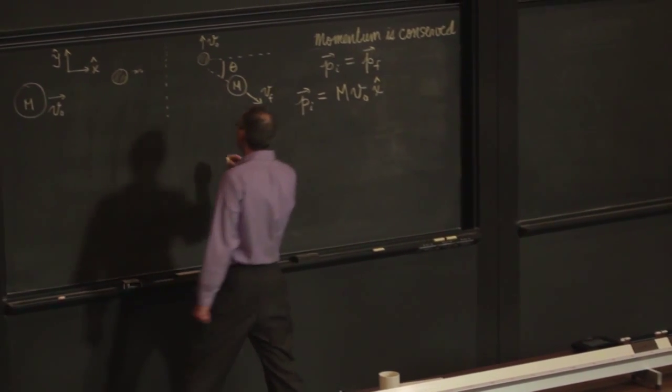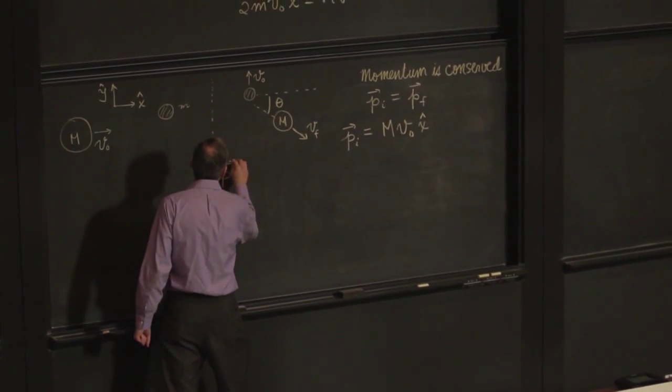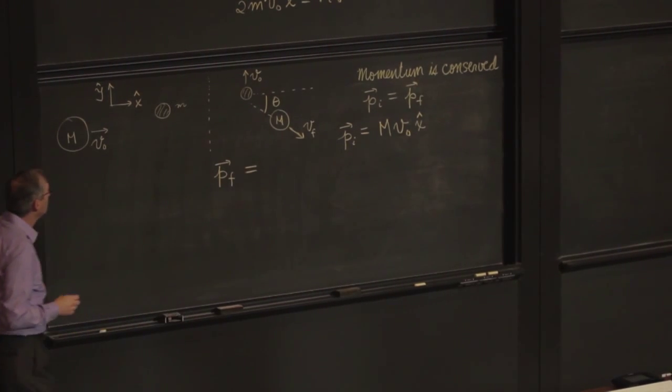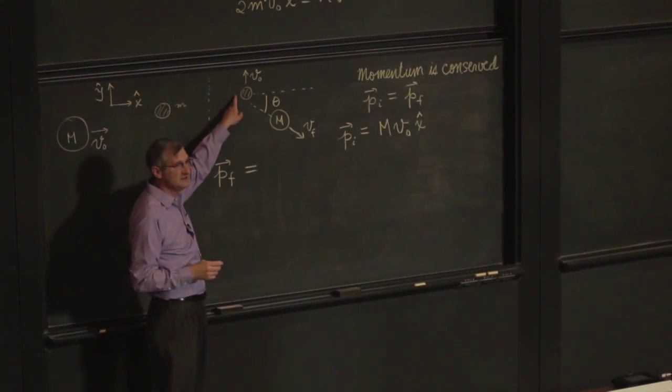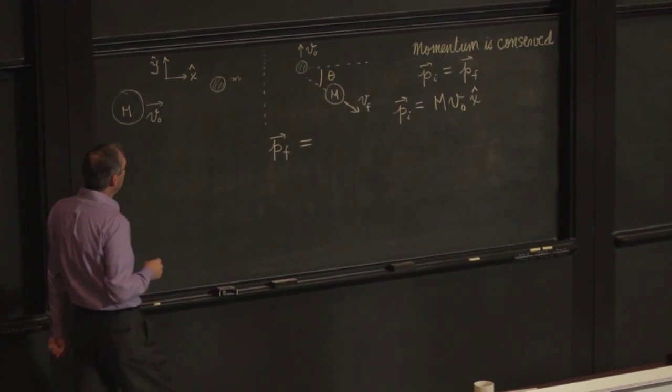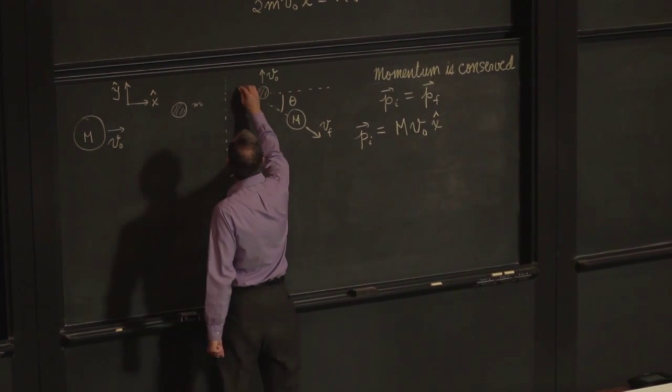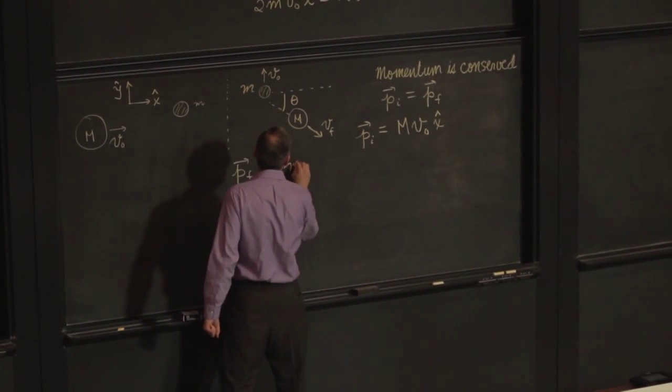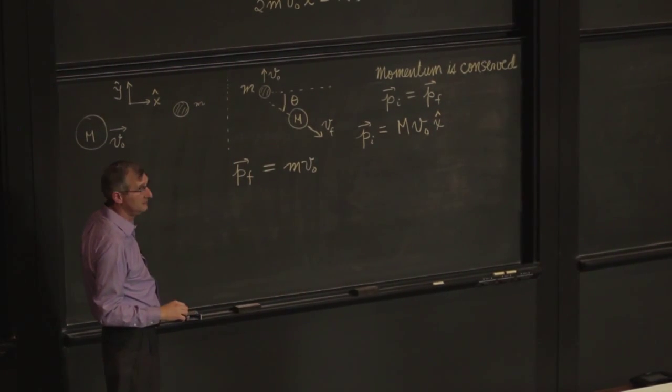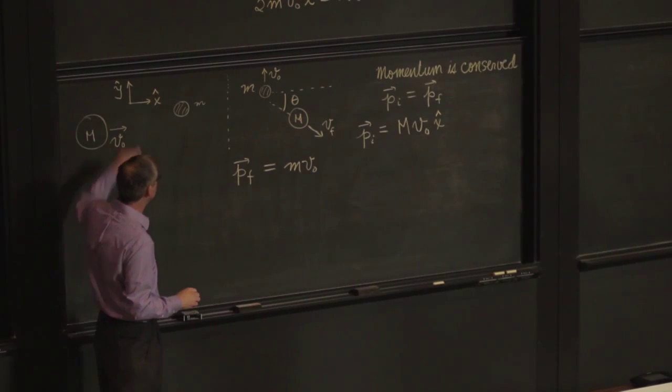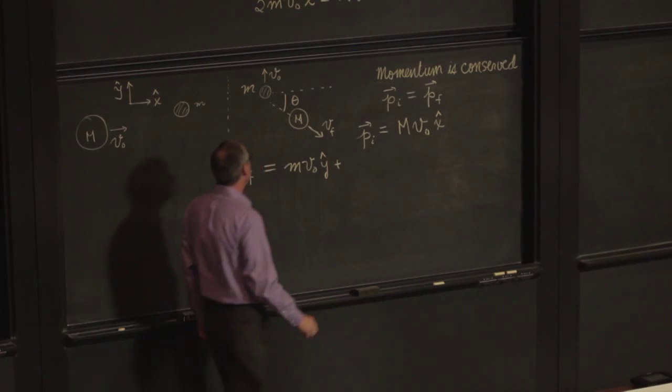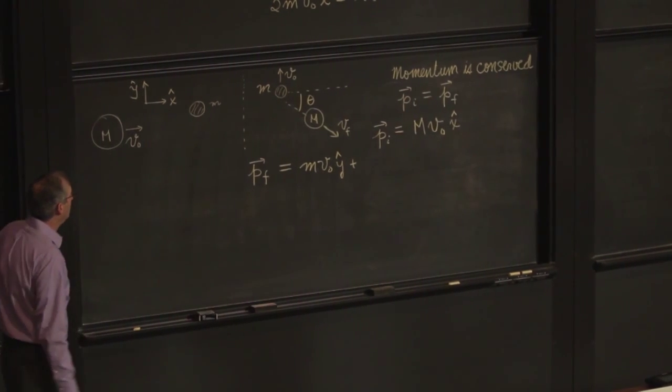P final isn't so easy, so I need more room. I'm going to start it over here. P final. What if we deal first with the pin? P final for the pin would be, sorry, this is little m. So little m V naught in the positive y direction.